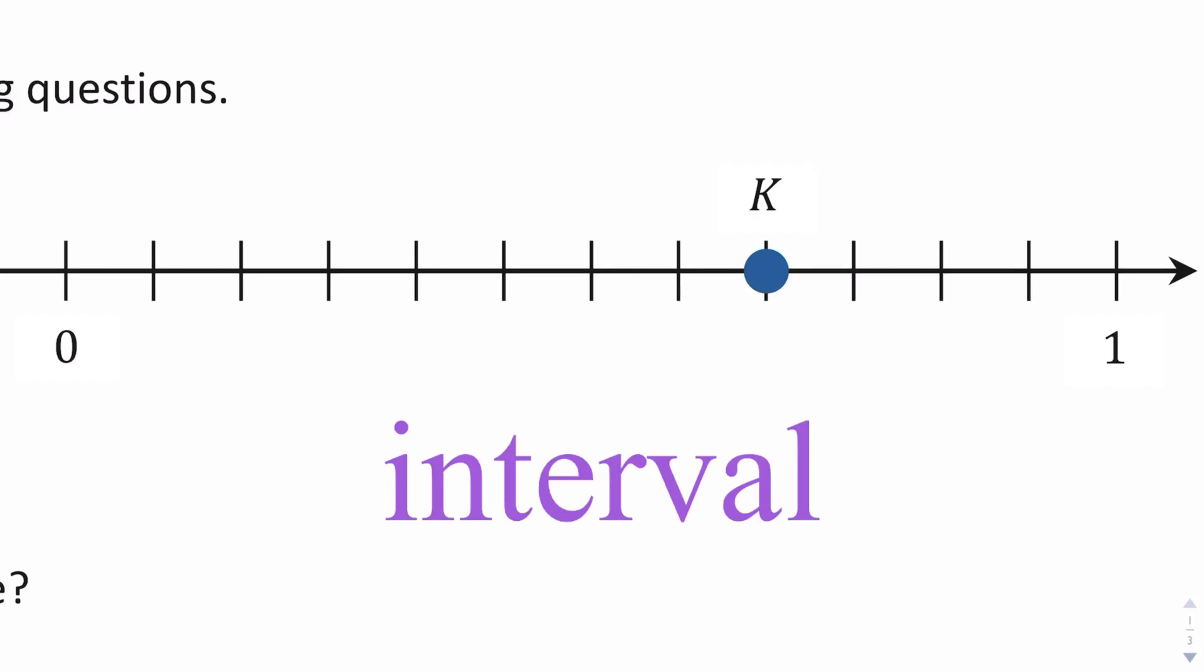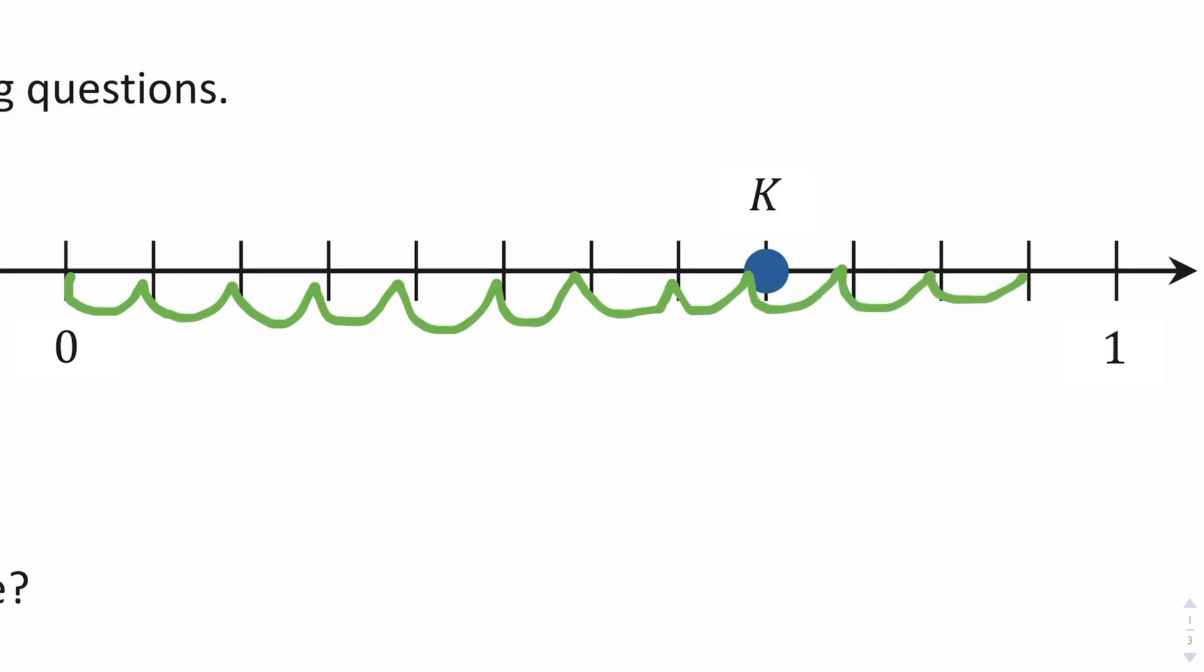So count with me: one, two, three, four, five, six, seven, eight, nine, ten, eleven, twelve. Great, now I know that there are twelve spaces between zero and one. That means that each space, each interval, must represent one twelfth.